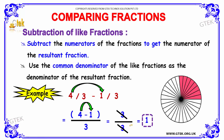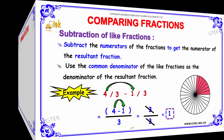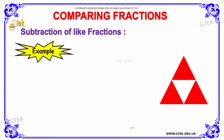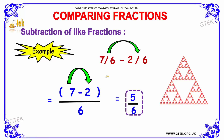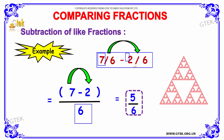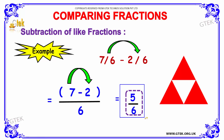On cancelling 3 divided by 3, we get the value of 1. The next example: 7 divided by 6 minus 2 divided by 6. Keeping the common denominator as 6, we subtract the numerators: 7 minus 2 equals 5. So the answer is 5 divided by 6.